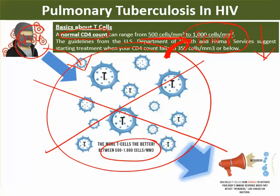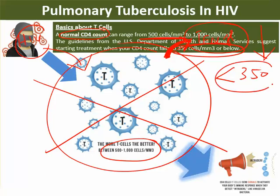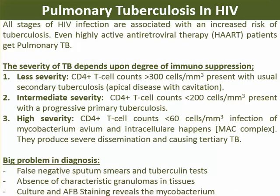If the CD4 count reduces below 350 cells per cubic millimeter, we start active HIV treatment and the person has a chance of getting tuberculosis infection. In HIV patient management, we regularly monitor the CD4 count. Once it goes below 350, there is a significant chance of tuberculosis infection.